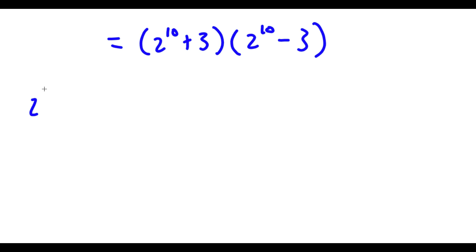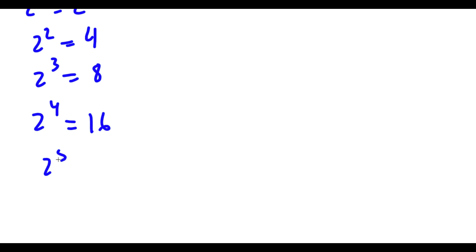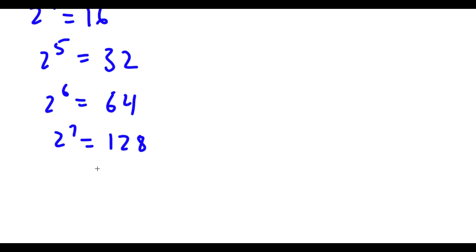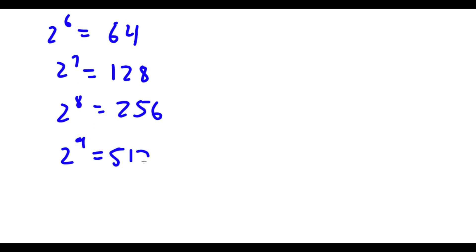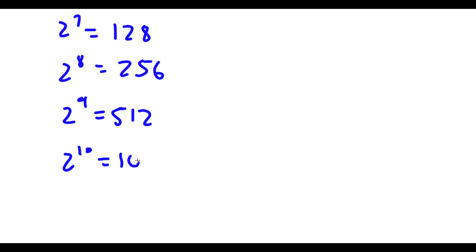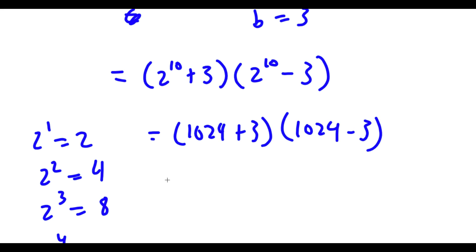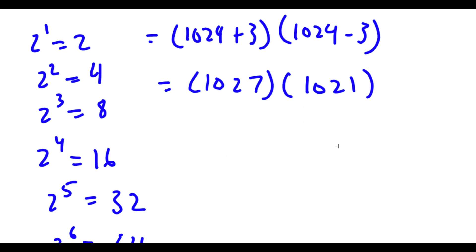Let's simplify 2 to the power of 10. We know 2^1 = 2, 2^2 = 4, 2^3 = 8 — it doubles every time. So 2^4 = 16, 2^5 = 32, 2^6 = 64, 2^7 = 128, 2^8 = 256, 2^9 = 512, and 2^10 = 1024. So I have (1024 + 3) times (1024 - 3), which is 1027 times 1021.